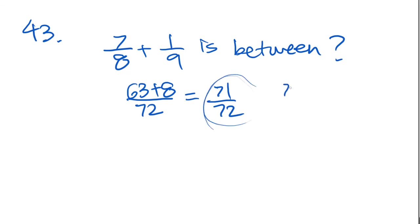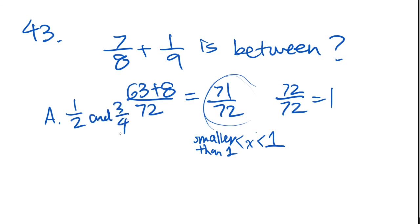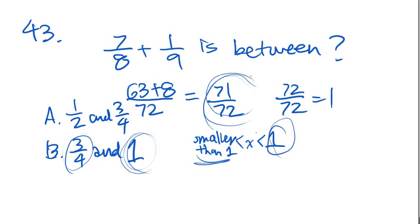Now this number is very close to 72 over 72, which is 1. So we know that the answer is going to be something between 1 and something smaller than 1. So the answer is going to be somewhere here. Let's look at the answer choices. Okay, answer choice A says 1 half and 3 fourths. Nah, I think that's a little bit too small. B says 3 fourths and 1. Ah, I think we have our answer. Because 3 fourths is smaller than 1, and the upper limit is the 1. And 71 over 72 is definitely between these two numbers. So the answer choice is going to be B.